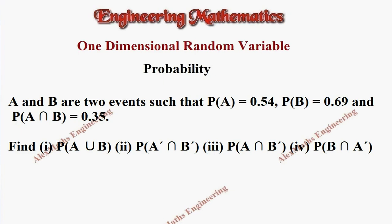Hi students, this is Alex. In this video we have a problem where the probability of A, B, and A intersection B is given. First we have to find P of A union B. So by formula, P of A union B is P of A plus P of B minus P of A intersection B.